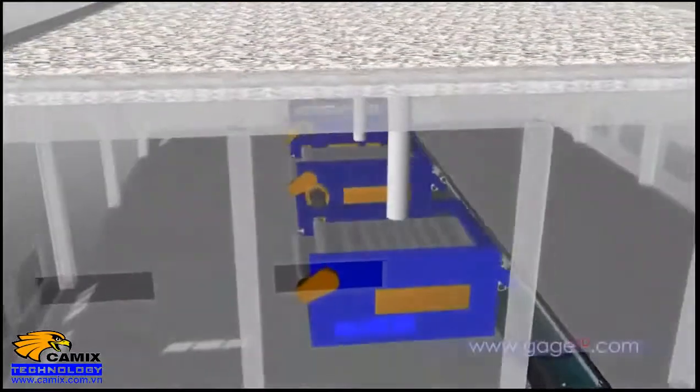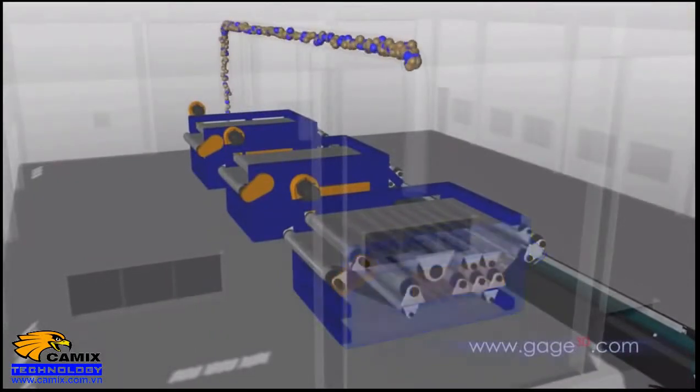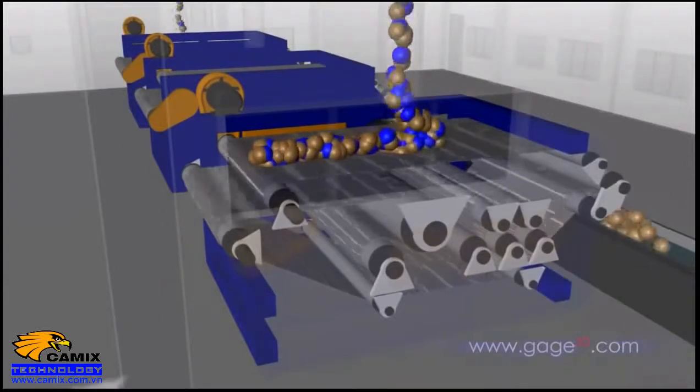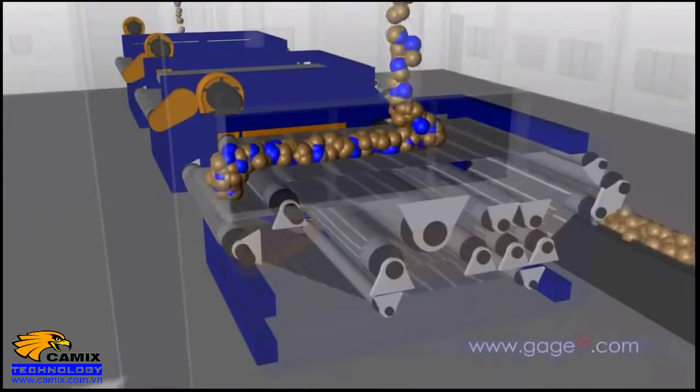After the anaerobic digester, solids go through one last dewatering process, in this case a belt press. As the name suggests, water is squeezed out of the solids as they are pressed between two moving belts.